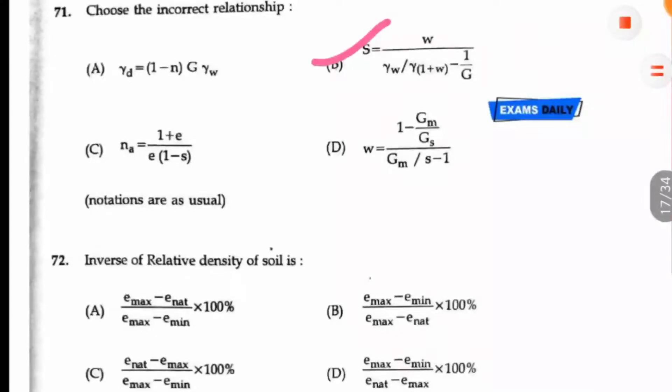Question number 72: The inverse of relative density of soil is? We know the relative density is (e_max - e)/(e_max - e_min). If you take just the reverse, it is (e_max - e_min)/(e_max - e_natural) × 100. So option B will be the answer here.